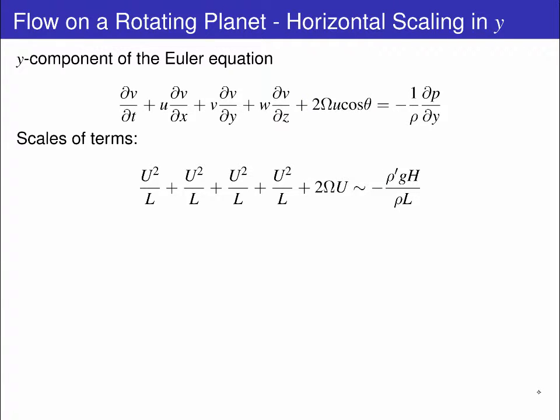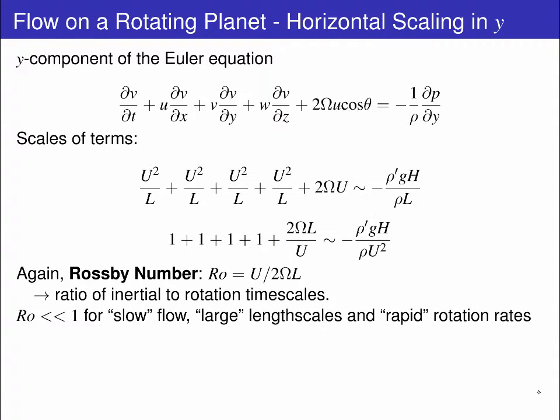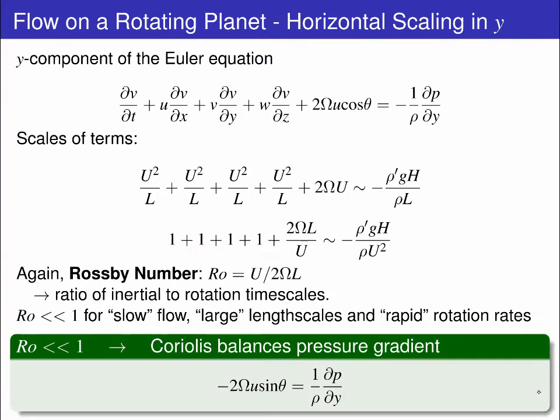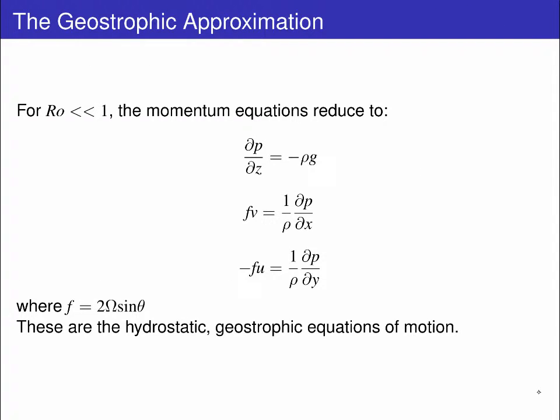Again, we scale these as before and non-dimensionalize with U squared on L, giving a bunch of order 1 terms, the inverse Rossby number on the left-hand side and the non-dimensional hydrostatic pressure term on the right-hand side. So, for small Rossby numbers, these two terms dominate and you are left with negative 2 times the vertical component of the rotation vector latitude theta multiplied by the east-west velocity balanced by the north-south pressure gradient normalized by density. To reiterate, the east-west velocity is balanced by the north-south pressure gradient. Bringing these three scaled equations together completes the geostrophic approximation.